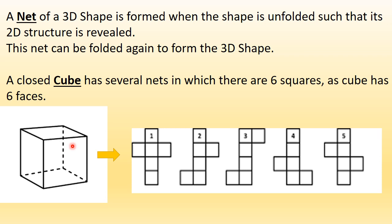Any 3D shape would have several faces, several edges, and several vertices. Now what are vertices? Vertices are the points where the edges are meeting. So this edge and this edge are meeting at this point — this is a vertex. Any 3D shape would have several faces, edges and vertices. This is something that you must have learned in your previous classes.